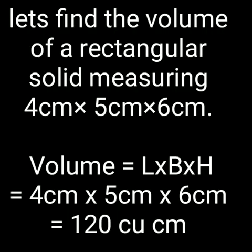Let's find the volume of a rectangular solid measuring 4 cm × 5 cm × 6 cm. We know volume equals length × breadth × height. So we multiply them and get 4 cm × 5 cm × 6 cm, which gives 120 cubic centimeters, because centimeters are multiplied three times to give cubic centimeters. In the case of area, we multiply twice, so it is square; here three times, so it is cubic.